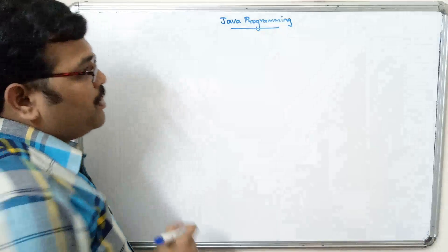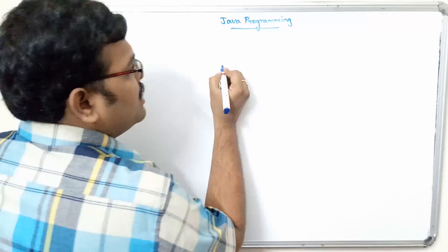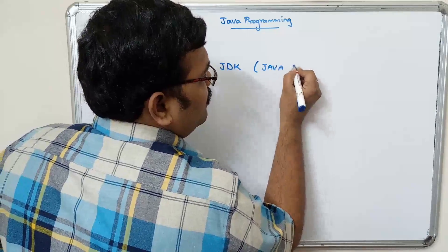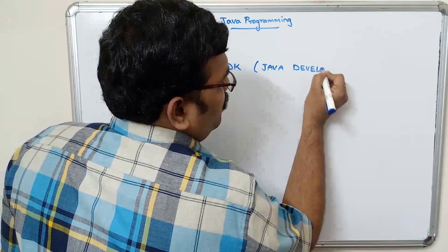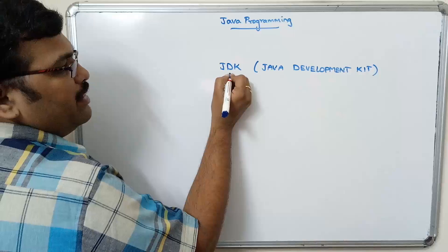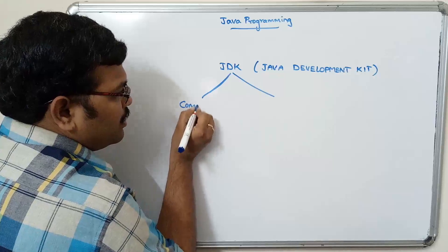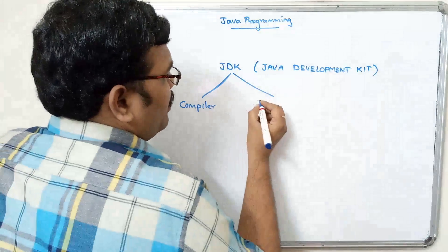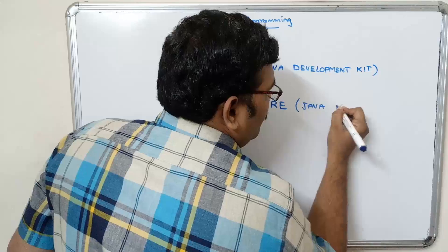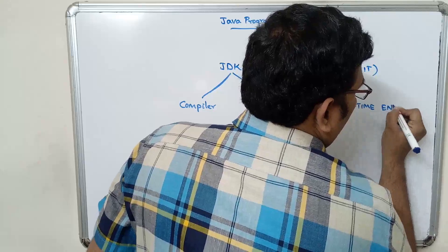Let us see the basic terminologies. The software used to execute Java applications is JDK. JDK is nothing but Java Development Kit, and this JDK consists of two things: one is the Java compiler, and another one is JRE, that is Java Runtime Environment.